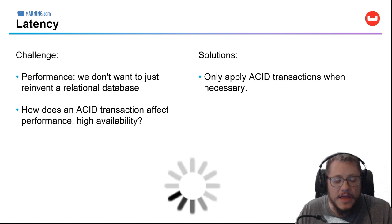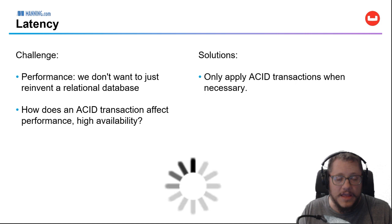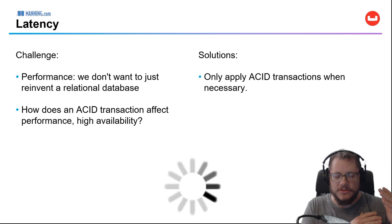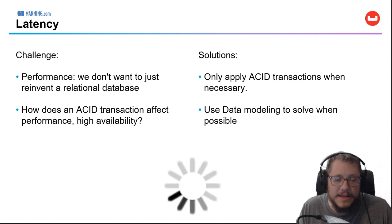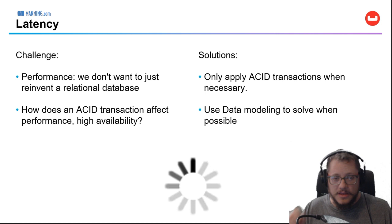We need to understand how an ACID transaction affects performance and high availability. With transactions you can run a certain number of operations, without transactions you'll have a higher throughput. Basically, we're going to solve this with data modeling to reduce the transactions we need, but use a transaction when we have to.